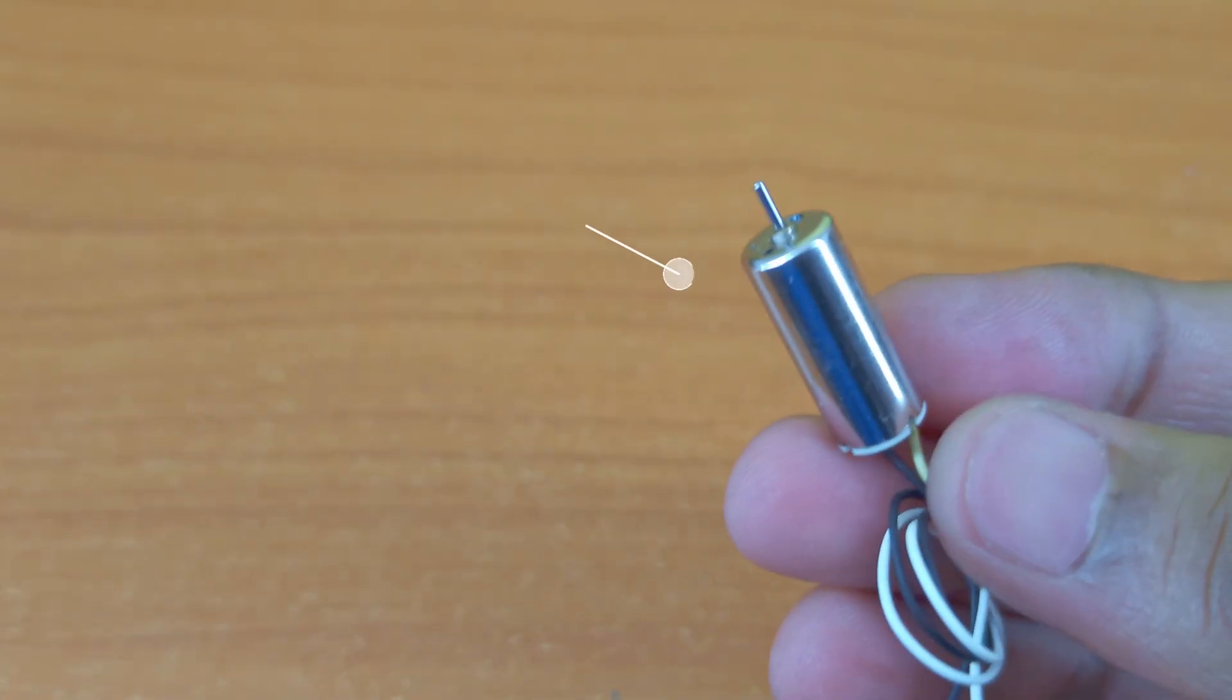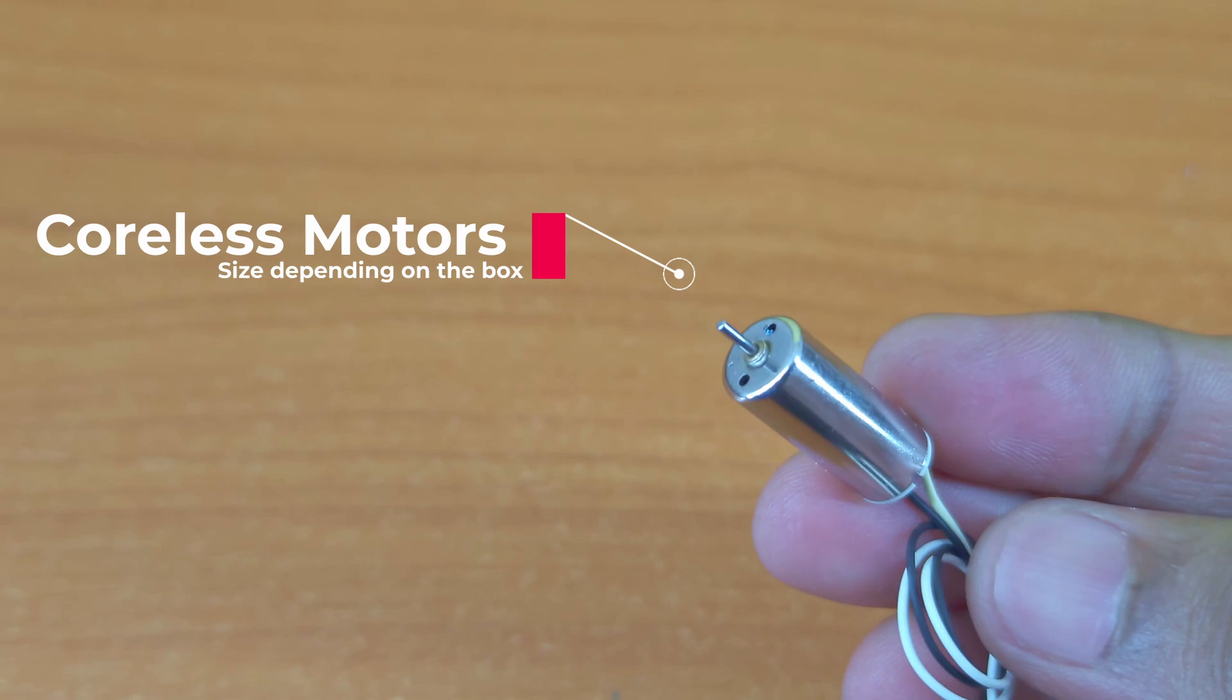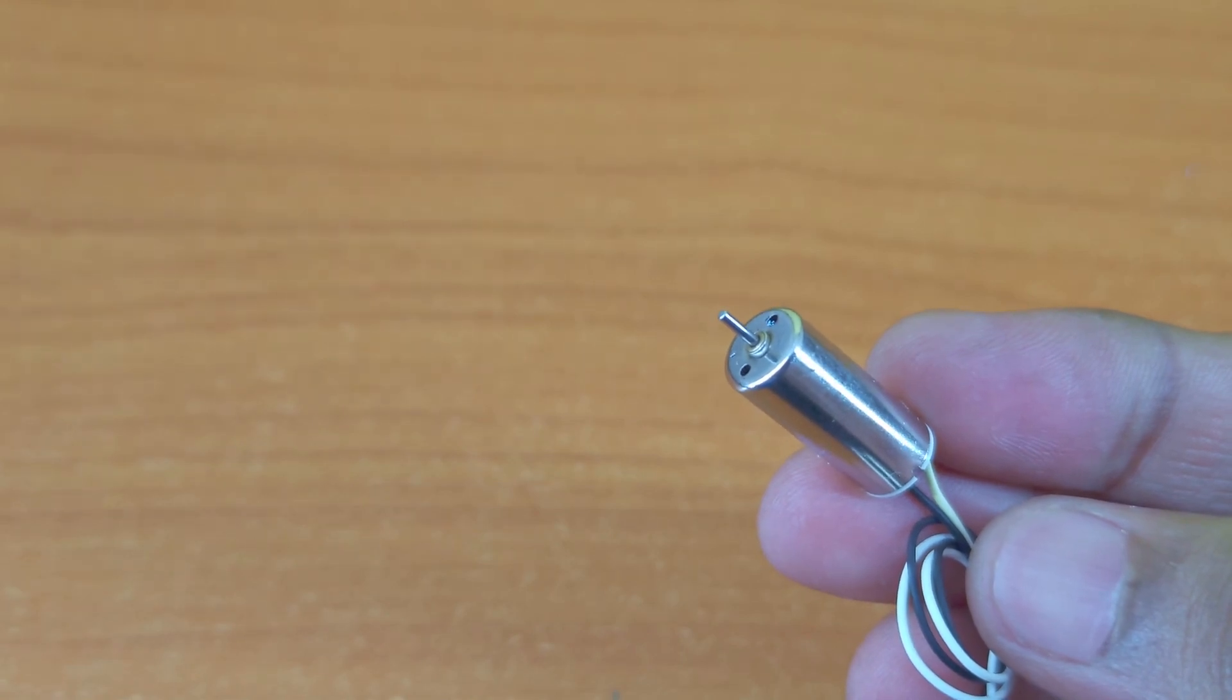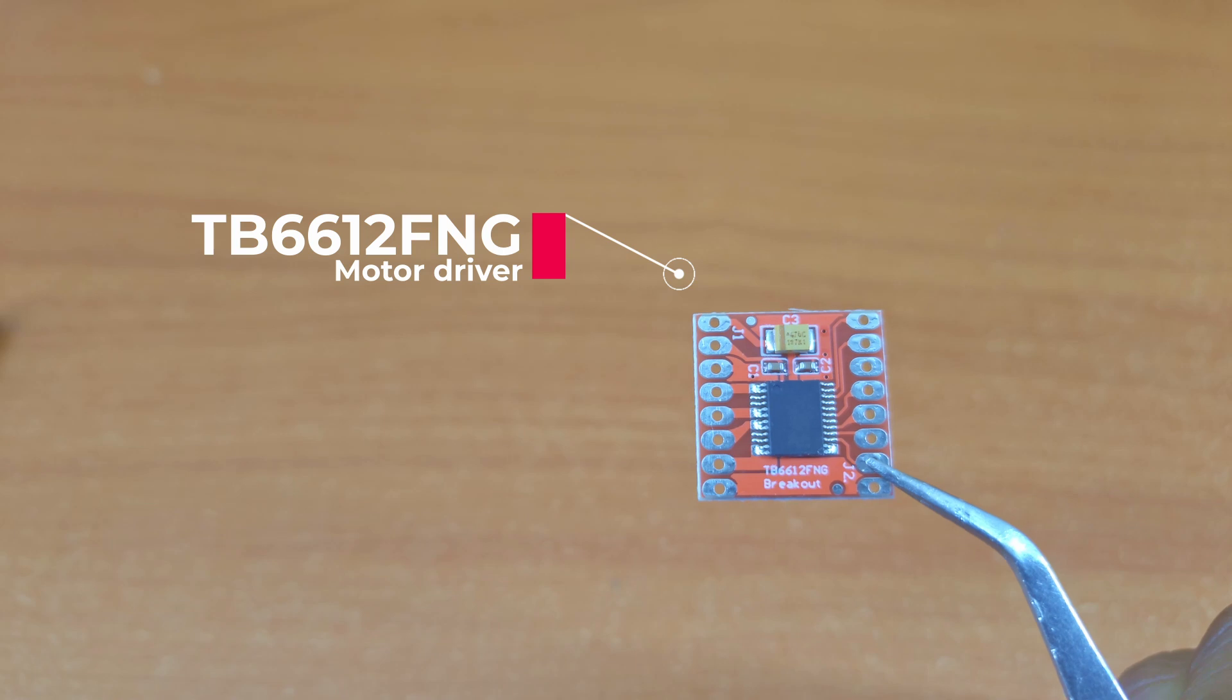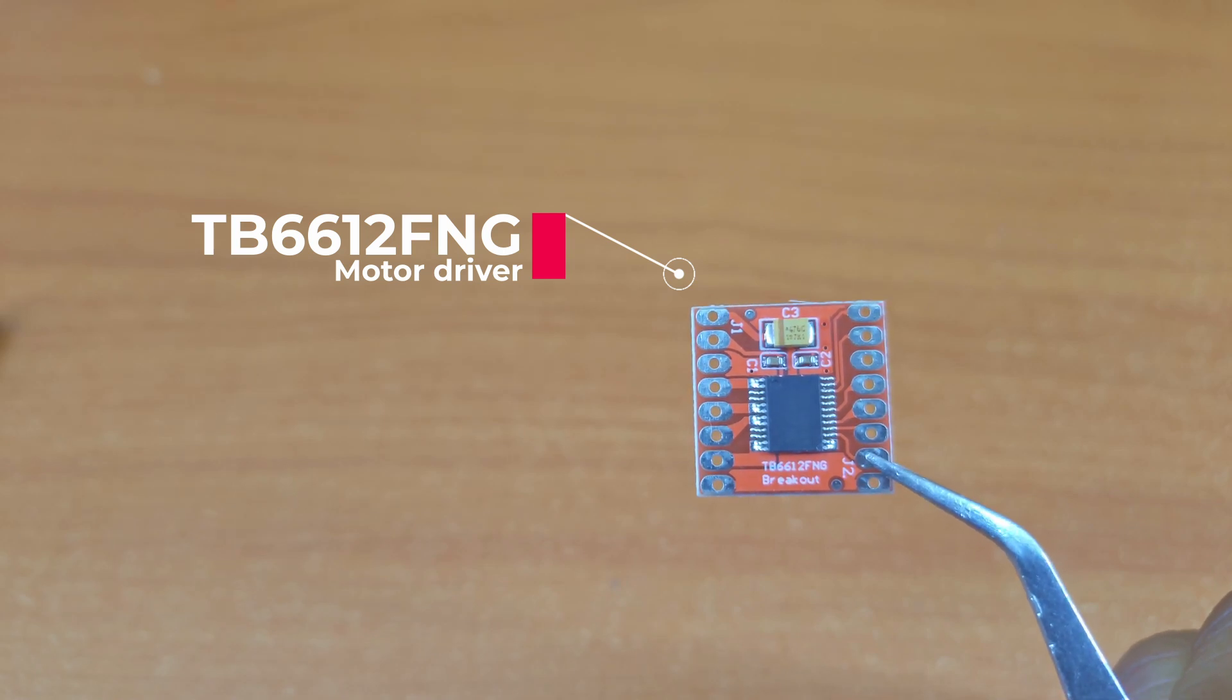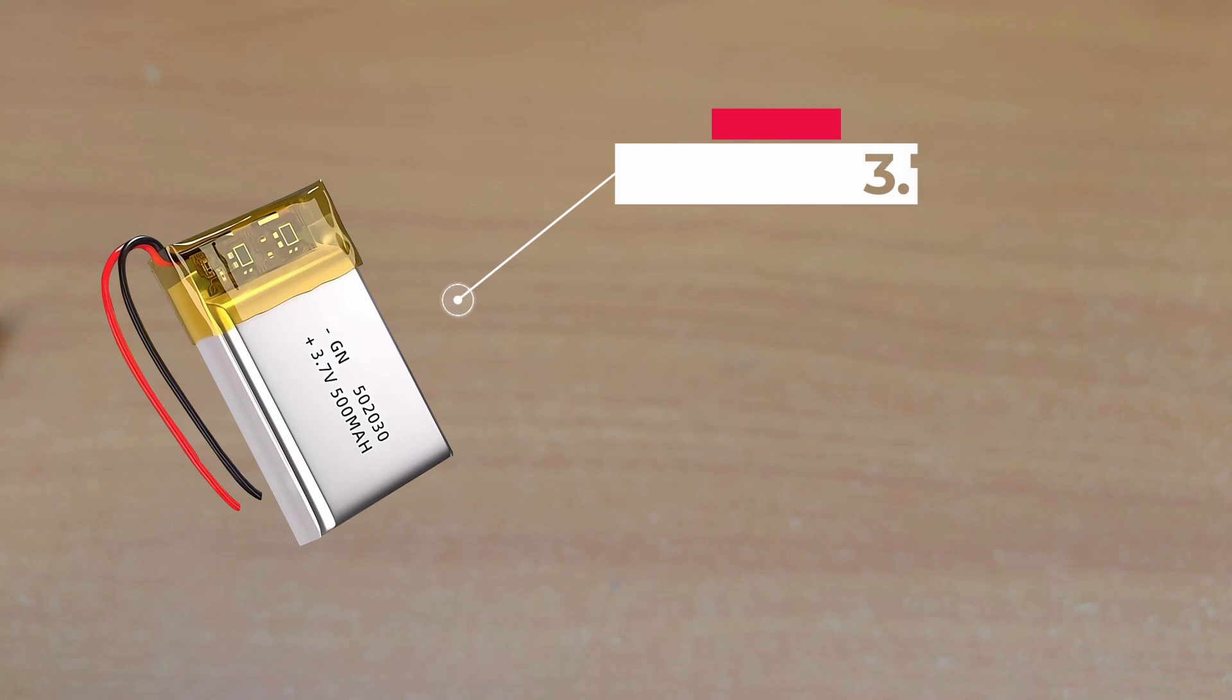Next, we need micro coreless motors. These are 16mm in length. You should measure your box and get the required size. We need a motor driver. This TB6612FNG-based mini motor driver is perfect for our project. A small battery - this one is 500mAh.